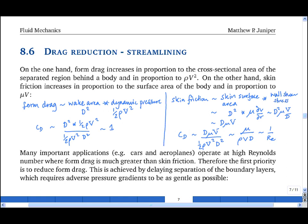But the important point for drag reduction is to note that when the drag is form drag, we can't do much about the dynamic pressure, but we can change the wake area. So to reduce form drag, we want to reduce the wake area.